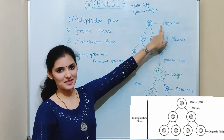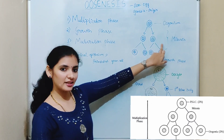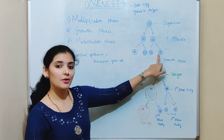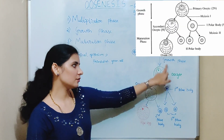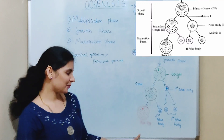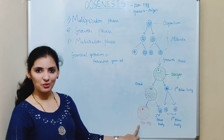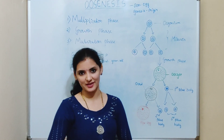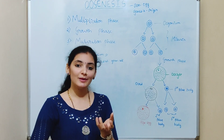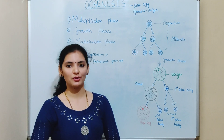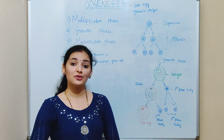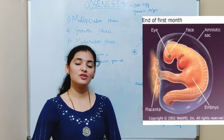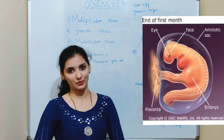The oogonia are the stem cells, so they undergo mitotic division and produce more oogonia. These oogonia proliferate and ultimately produce primary oocytes and the egg or ovum. However, the production of oogonia takes place during early embryonic life itself — that is, when the female fetus is present inside the body of the mother. During the first month of embryonic life, when the fetus is one month old, the primordial germ cells in the ovary begin mitotic division.